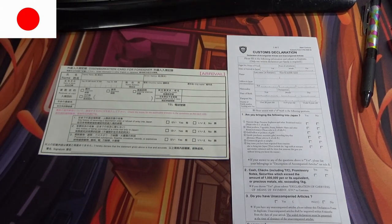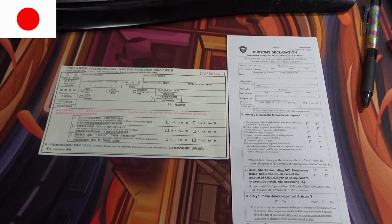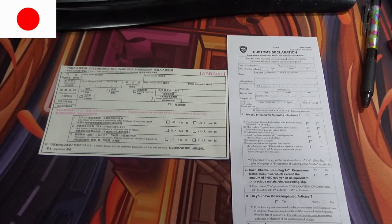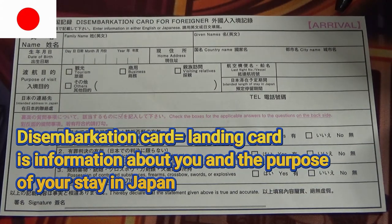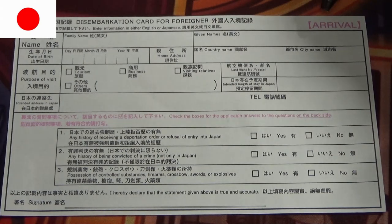These forms are in Japanese and English. I don't know if they have them in other languages — those are the two languages, Japanese and English. So I'm going to explain how to fill these forms out. Looking at the disembarkation card for foreigner first — it says arrival. There's also one for departure, but I'm just looking at the arrival one.